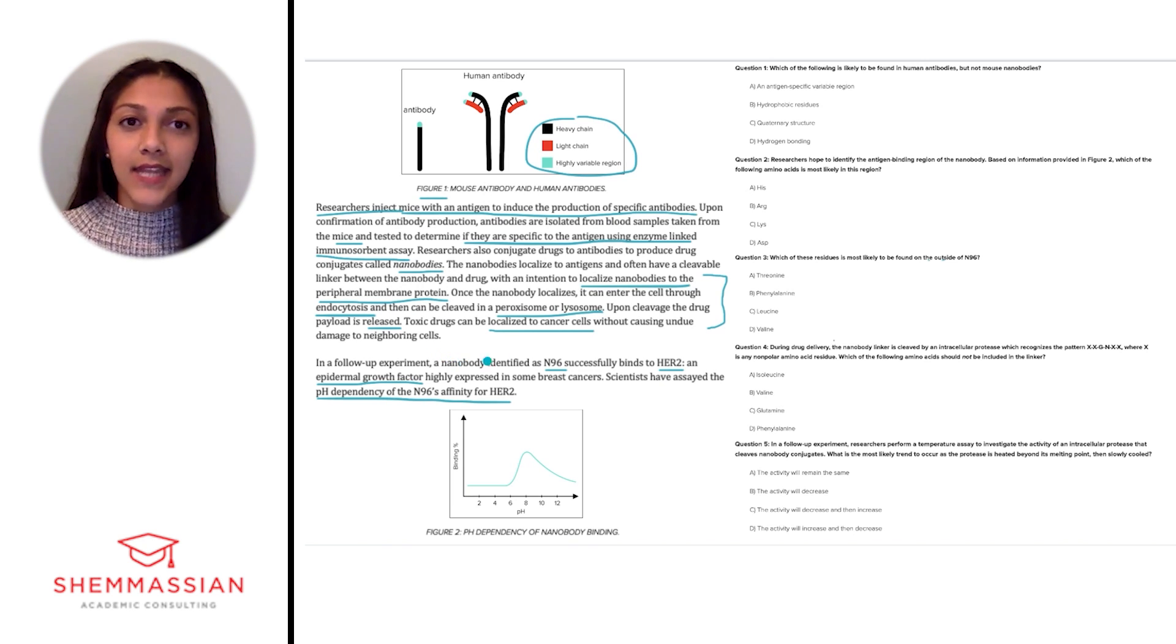In this case, they tell us that N96 is a nanobody, which is a drug conjugated to an antibody. HER2 is an epidermal growth factor highly expressed in some breast cancers. While you may not have heard of N96 or HER2 before, you likely have learned about antibodies and growth factors. Recognizing these underlying topics that you're already familiar with can help to reduce your own stress levels and anxiety during the exam.